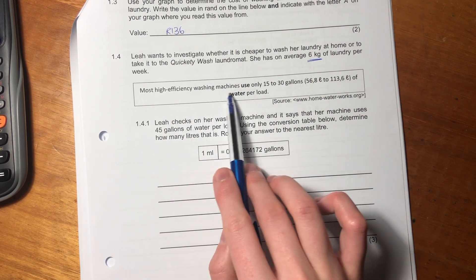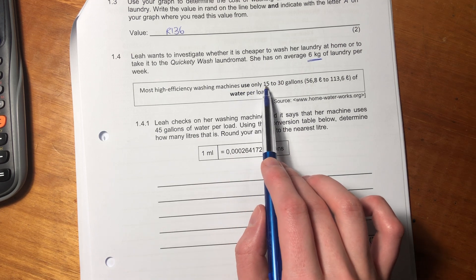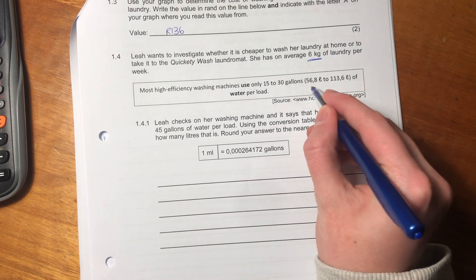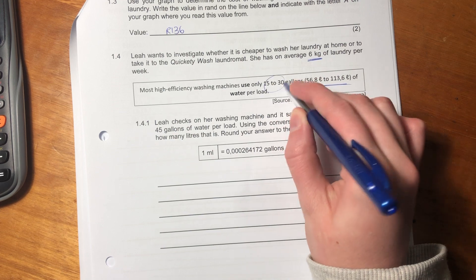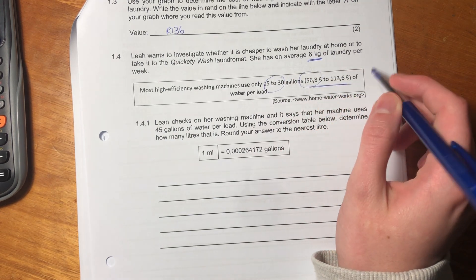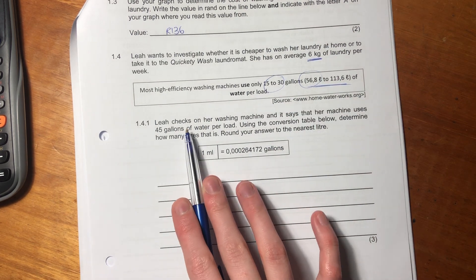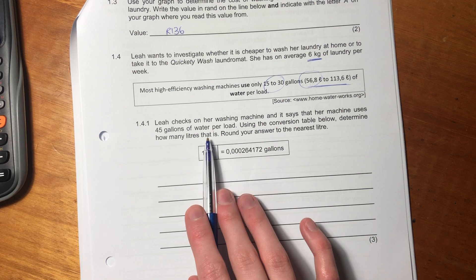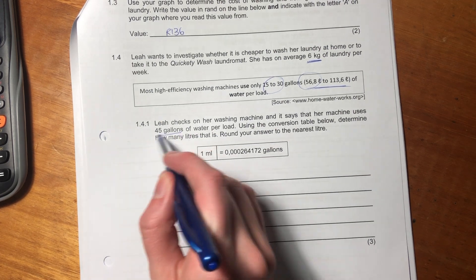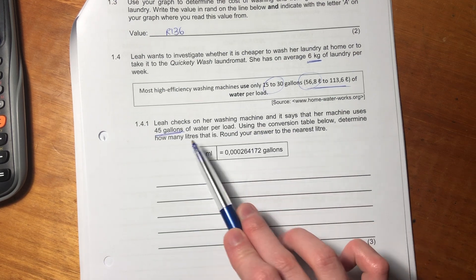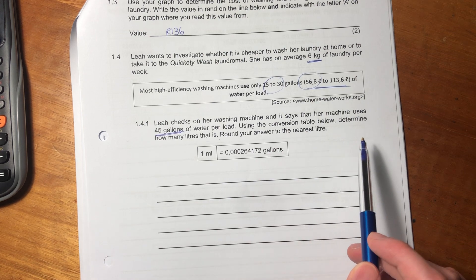Most high-efficiency washing machines use only 15 to 30 gallons of water per load. Leah checks on her washing machine and it says that her machine uses 45 gallons of water per load. Using the conversion table below, determine how many liters that is, round your answer to the nearest liter.